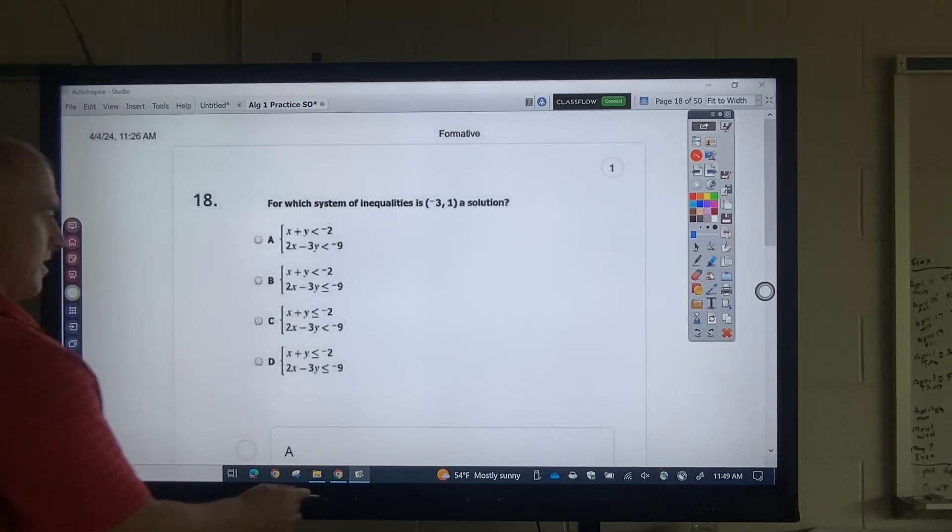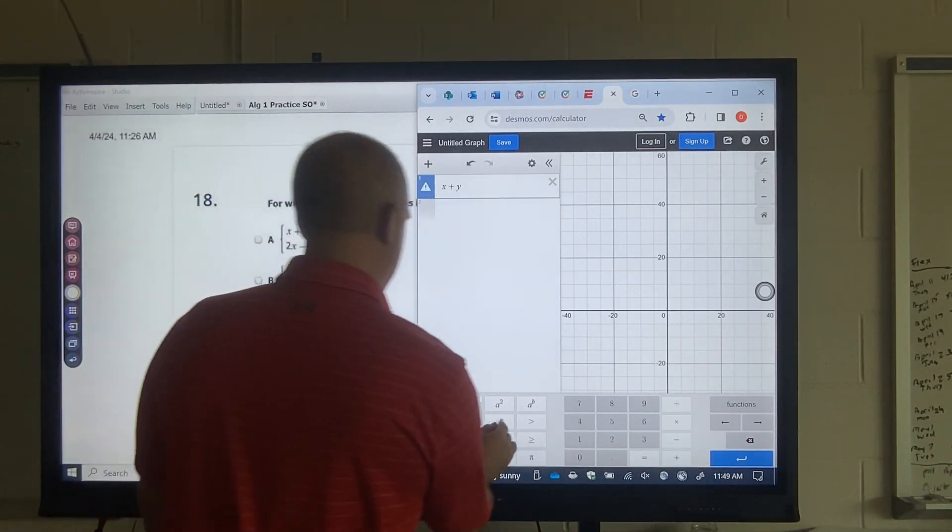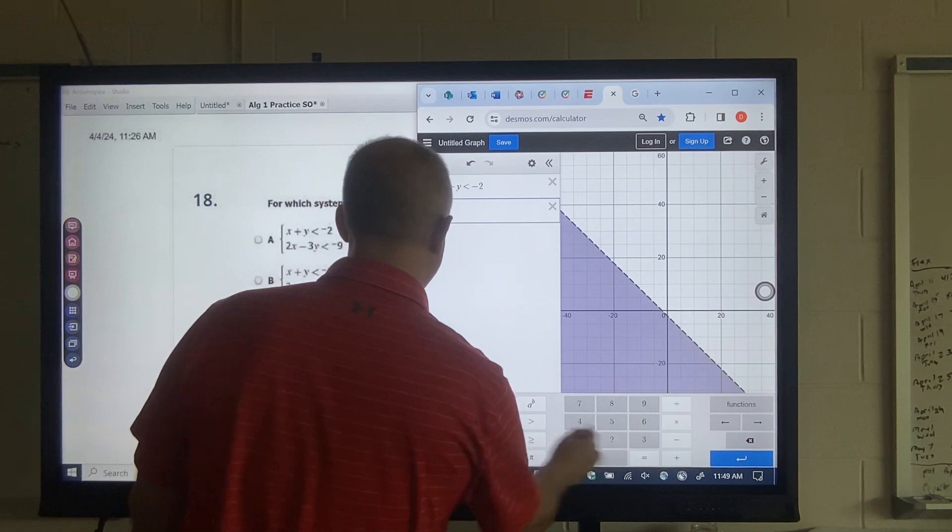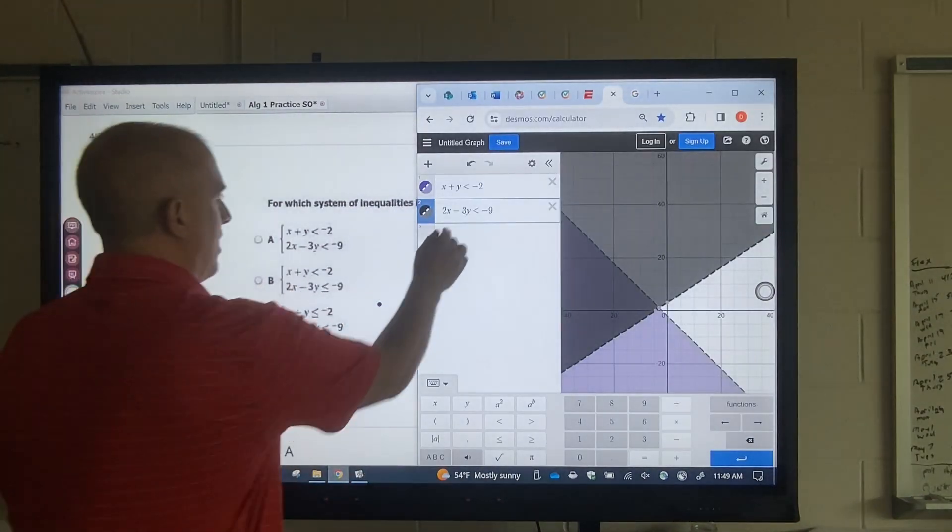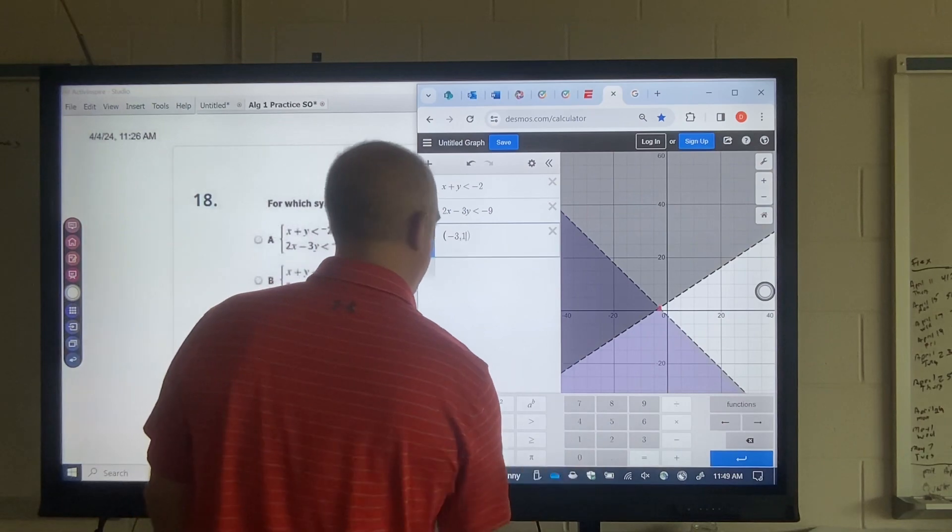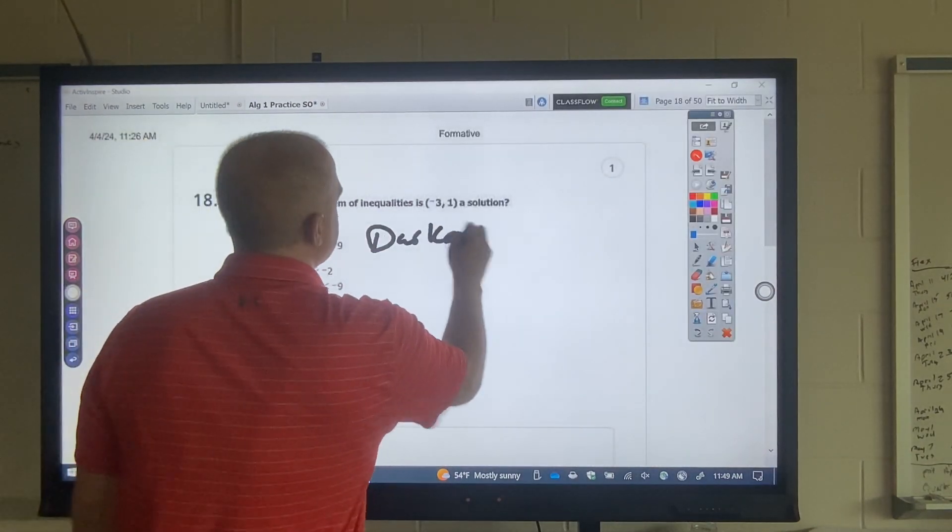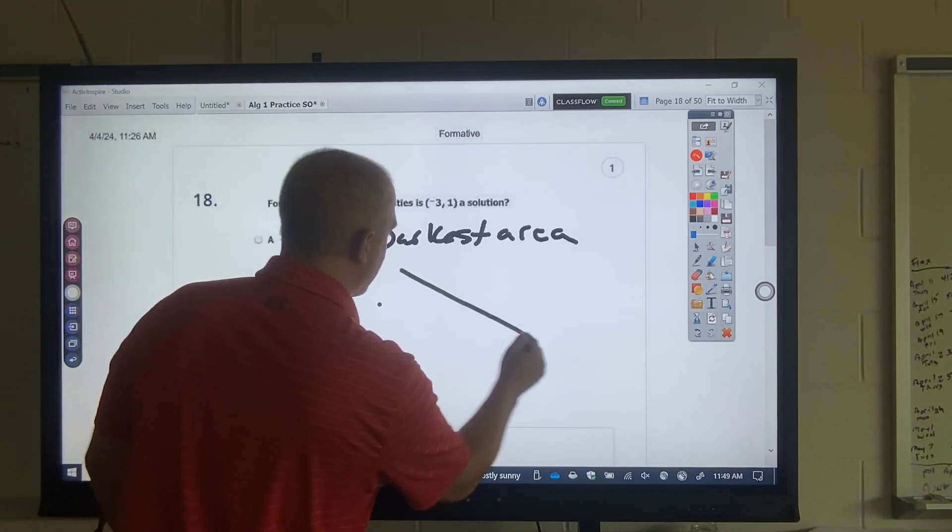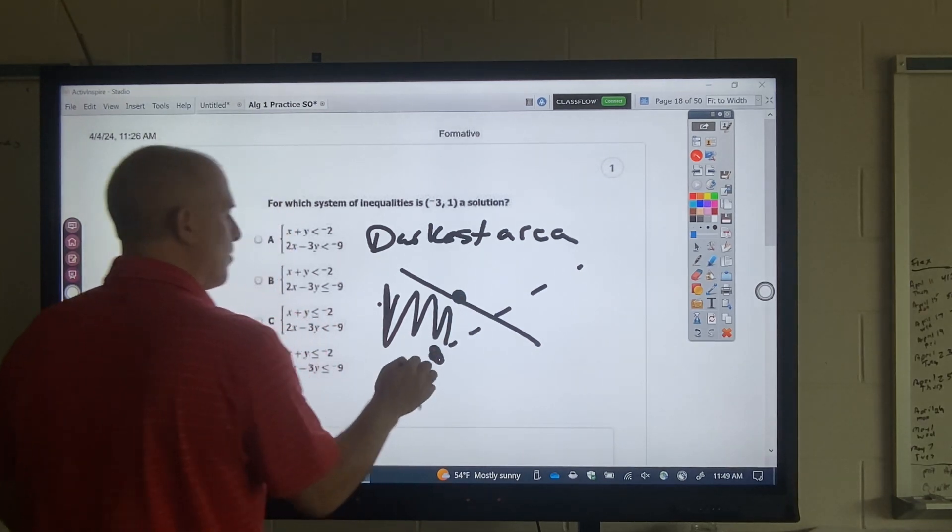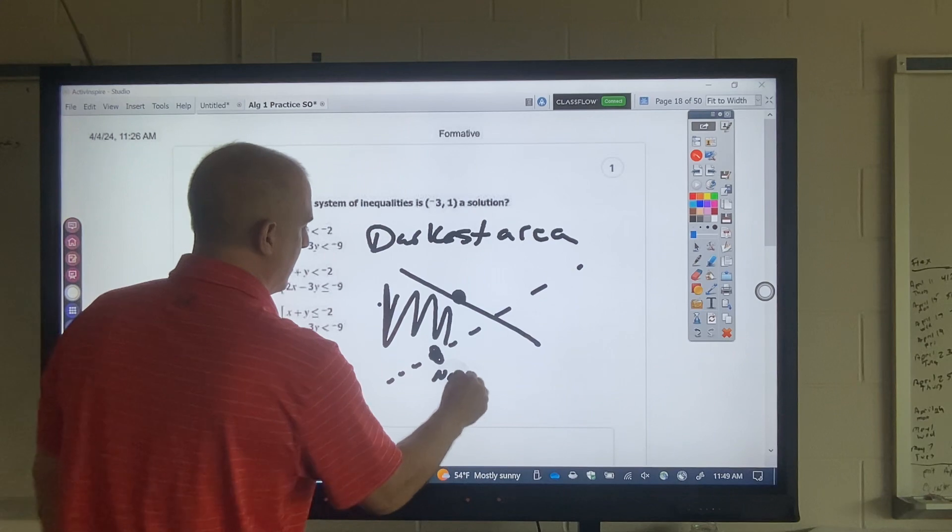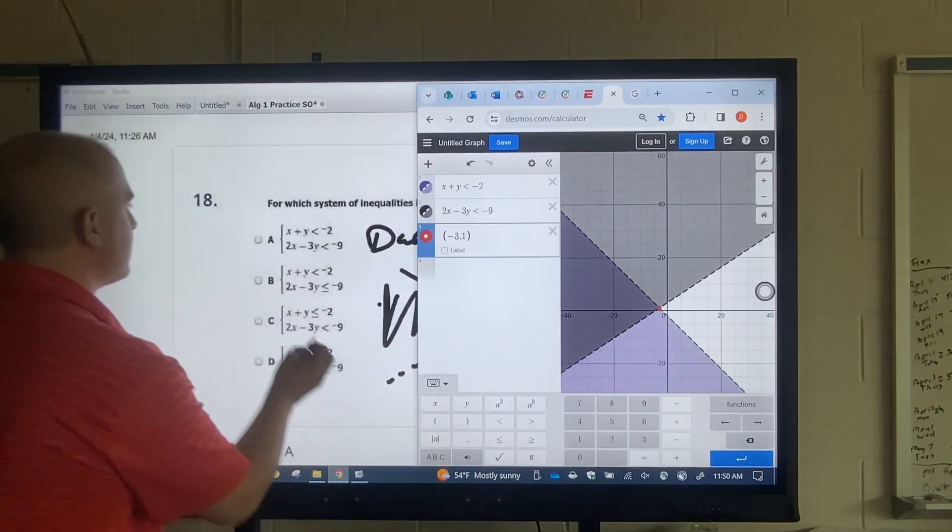All right. Which one is a solution to this? Okay. So what I want to do, okay, is I want to type these into desmos. Okay. 2x minus 3y less than negative 9. And then this question is negative 3, 1. So what I want to do with the points is I want to put them there. Now, what they have to be in is the darkest area. Now, something else that you can look at. If it's ever on the darkest area, let's say you had these two things and this was the darkest area. A point here or a point here. Well, the dashed line, this is no good right here. But this one would be a solution. So you got to be careful.